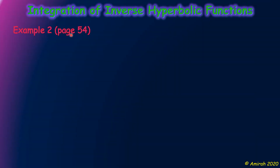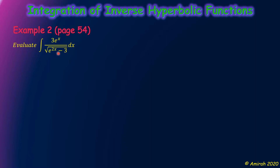Now let's look at Example 2, page 54, chapter 2 in your handout. Evaluate the integration of 3e^x over the square root of e^(2x) minus 3, dx.